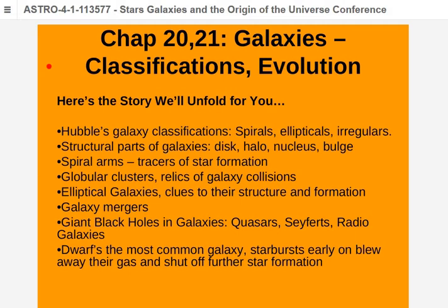Most of the bright galaxies in the universe are spirals and barred spirals — worth remembering. If you take a deep random picture of the sky you're mostly going to see spirals, not ellipticals or S0s. Now I'm getting into the next chapter, so let me pause there and begin today's topic.